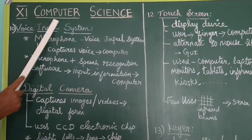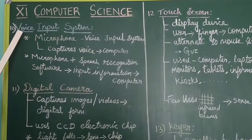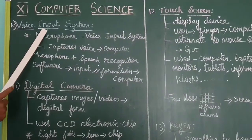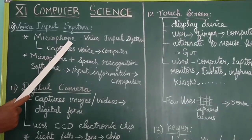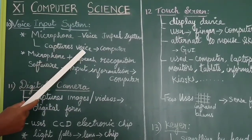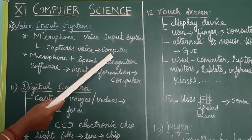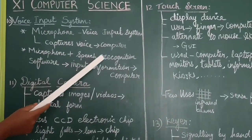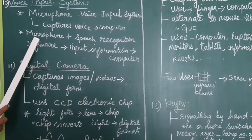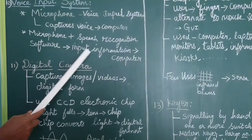Welcome to all 11th Computer Science Chapter 1 Introduction to Computers. Till last video we have seen 9 input devices. In this video we are going to see the 10th input device: the voice input system. Microphone is a device which is used for voice input. It captures voice and sends it to the computer. The microphone works along with speech recognition software, which is a new approach of inputting information to the computer.